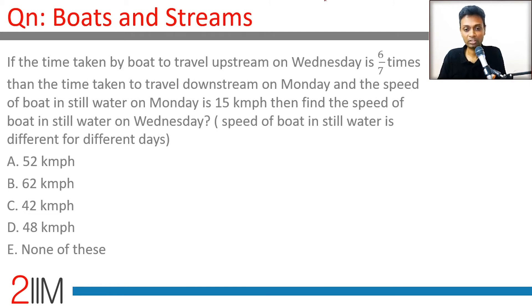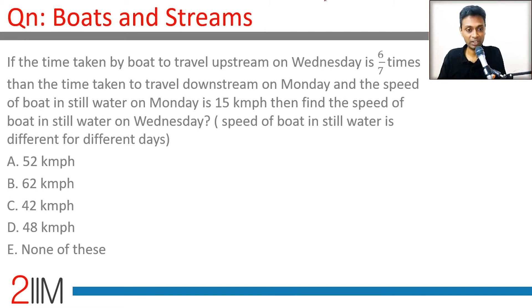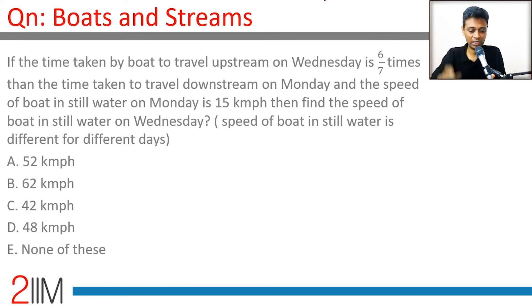This question itself tells us that still water speeds are different on different days, so there are multiple variables. The disadvantage is that every question has to be solved separately; the advantage is we tackle each question one at a time when information is given.